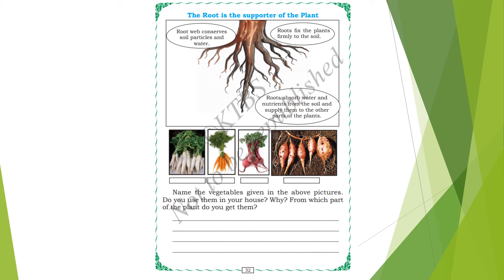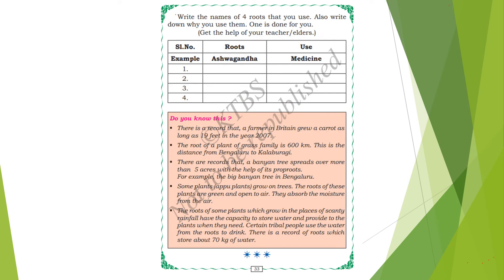Name the vegetables given in the pictures. Do you use them in your house? From which part of the plant do you get them? All of these come from roots. Write the names of four roots that you use and also write down why you use them. Get the help of your teacher or elders. For example, Ashwagandha is used for medicine — they make medicine by using Ashwagandha.